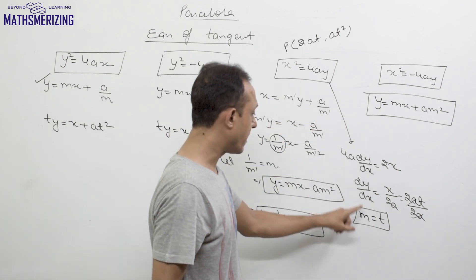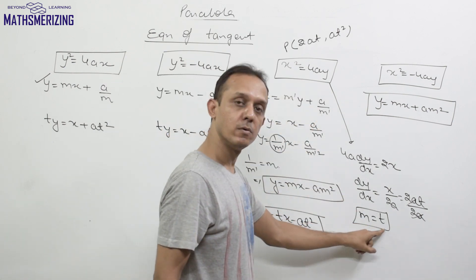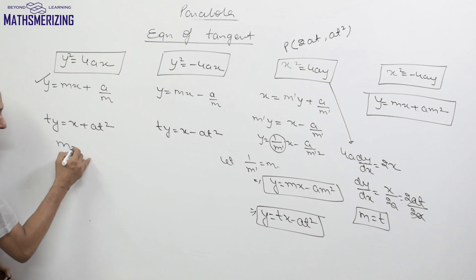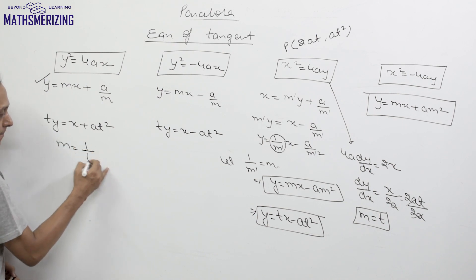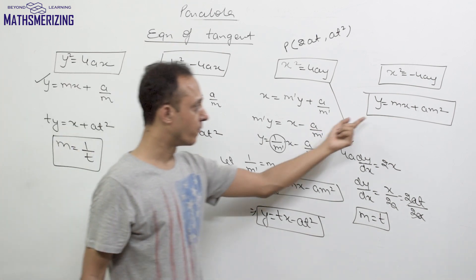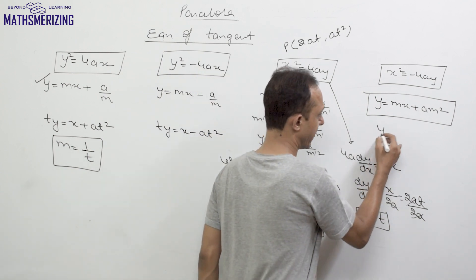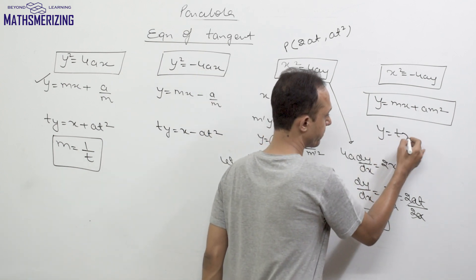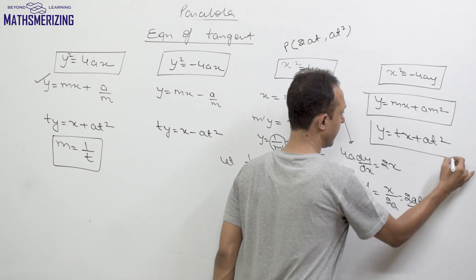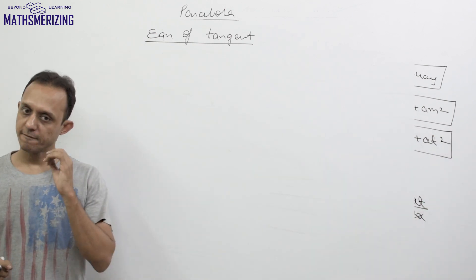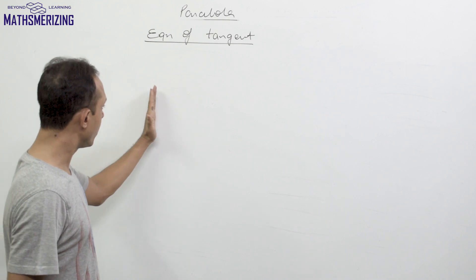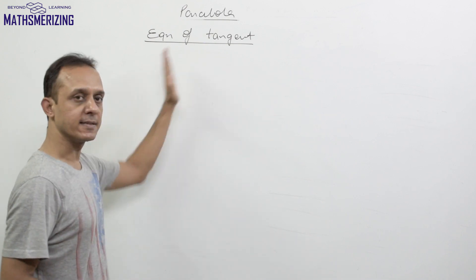For the third form, m equals t. For the first form y² = 4ax, the slope of the tangent is 1/t. For the fourth form x² = -4ay, the equation of tangent in terms of parameter t is y = tx + at².